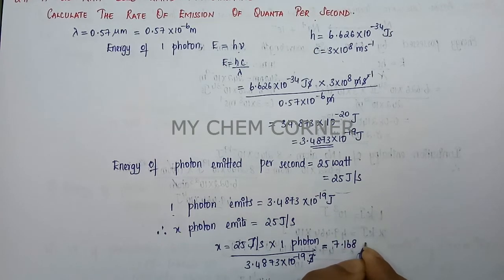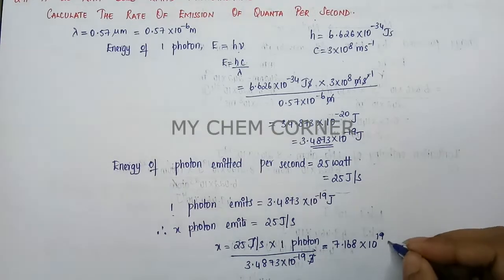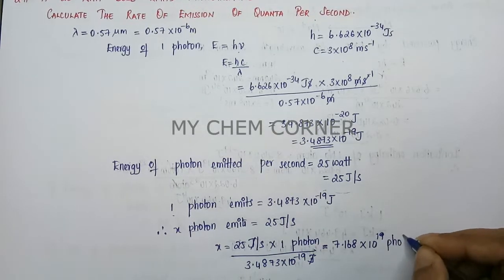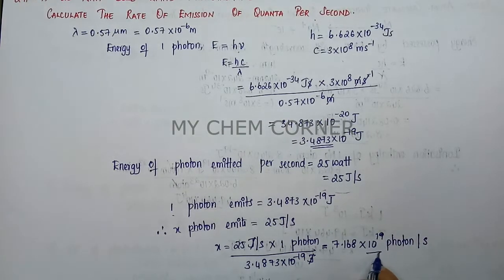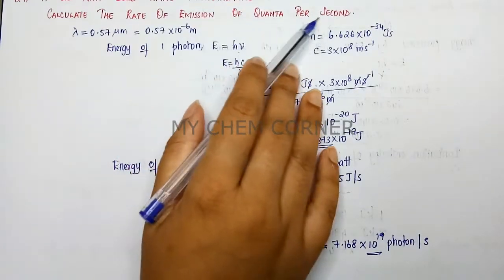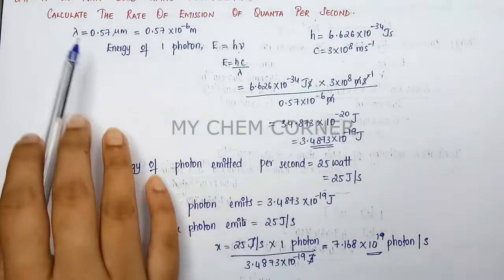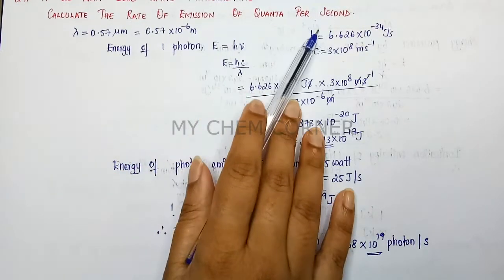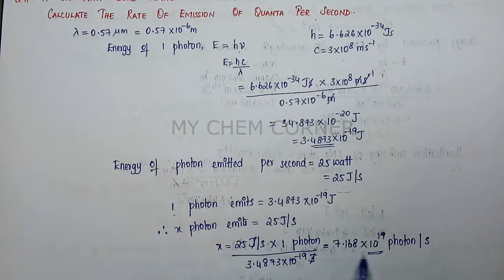25 divided by 3.4873 equals 7.168. The power: 10 to the minus 19 goes to the denominator, becoming 10 to the power plus 19. So x equals 7.168 × 10¹⁹ photons per second. This is the rate of emission of quanta per second — that many photons are emitted per second.